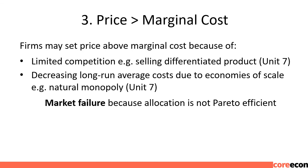Market Failure — Other Types. (3) Price greater than marginal cost: firms may set price above marginal cost because of limited competition, e.g., selling a differentiated product, or decreasing long-run average costs due to economies of scale, e.g., natural monopoly. This leads to market failure because allocation is not Pareto efficient. Competition policy through antitrust laws could break up monopolies or prevent their formation, in which case the competitive equilibrium would be attained.